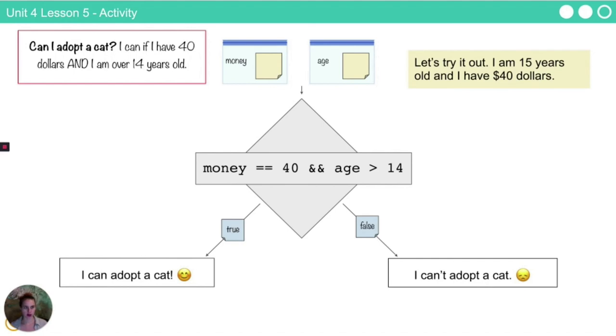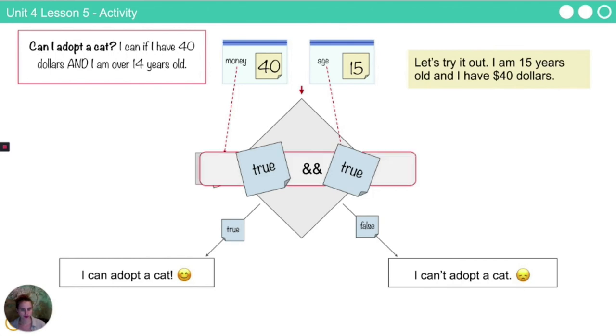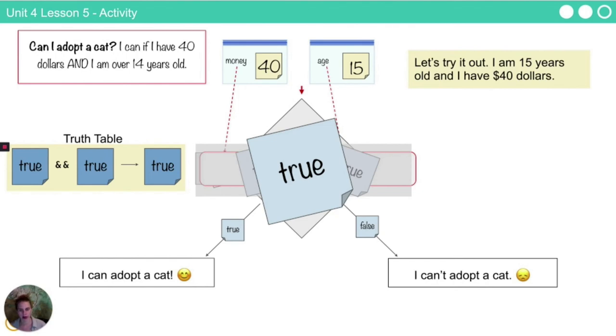Let's try it out. I'm 15 years old and I have $40. Let's see. I put those values into my variables. I evaluate 40 is equal to 40 and 15 is greater than 14. Okay, let's process those one side at a time. True, and 15 greater than 14, true. If I have an and statement, true and true, remembering our truth table, that whole thing evaluates to true, which means in my flowchart I follow down here and I can adopt a cat today. Great.